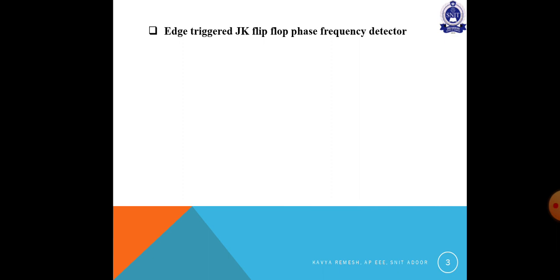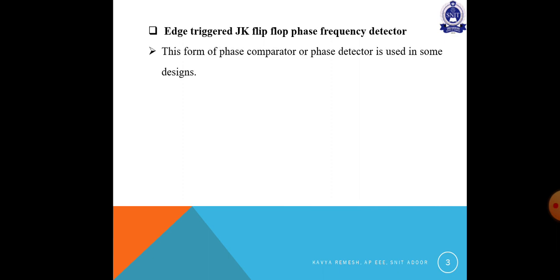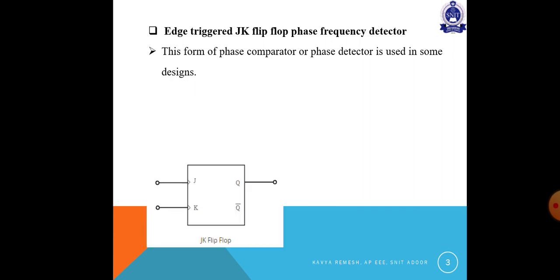A simple idea is an edge-triggered JK flip flop. What is an edge-triggered JK flip flop? You can learn this from digital circuits. Normally, a simple idea is that the phase frequency detector uses a JK flip flop. There is a figure of a JK flip flop — there are two inputs: J and K.